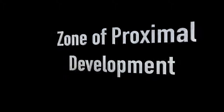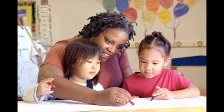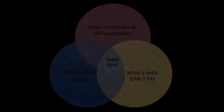The Zone of Proximal Development, or ZPD, is characterized by what a child can do independently as opposed to what they can do with focused assistance. This zone lies in the sweet spot between knowledge that the child has already mastered and knowledge that is too hard for a child to master on their own.